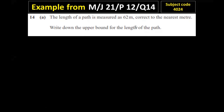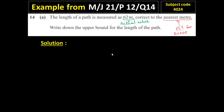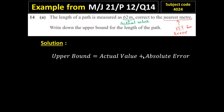You should know what is the actual value here. The actual value is 62 meters. And where is the key to find error? The key to find error is correct to the nearest one meter — so one meter is the key for absolute error. Now start to find the upper bound. The equation to find upper bound is: upper bound equals actual value plus absolute error.